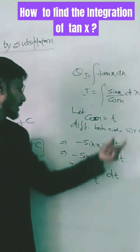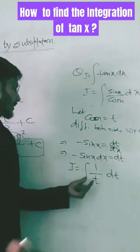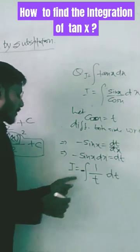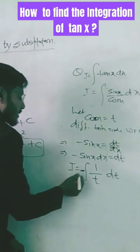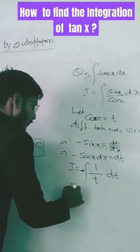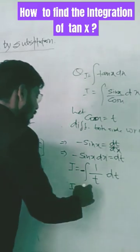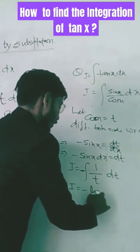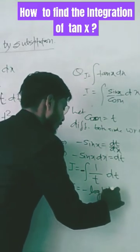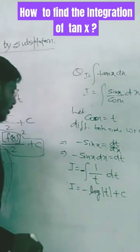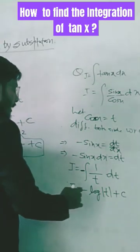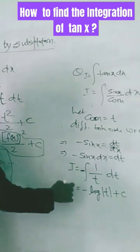Sin x into dx is considered dt with minus sign, so we will put a minus sign in front. Now we know that integration of 1 by t is log mod t, log mod t plus c. C is an arbitrary constant.